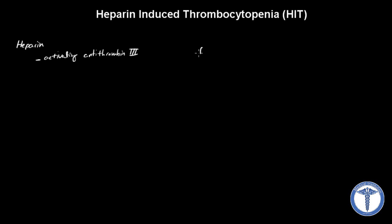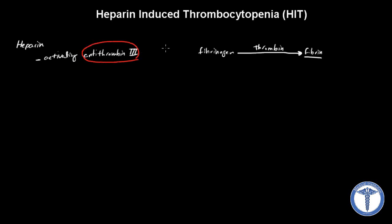So let's say we have fibrinogen, which gets converted to fibrin, and fibrin is one of the main important components of the coagulation cascade. We don't want to make this fibrin, and in order for fibrinogen to get converted into fibrin, we need thrombin. So if we give the patient heparin, heparin will activate antithrombin 3, which will then inhibit thrombin. Therefore, we're going to have inhibition of fibrin production.